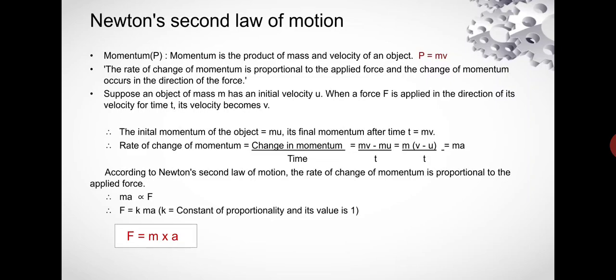That is, (v - u) / t is written as a. Therefore, rate of change of momentum is given by ma.